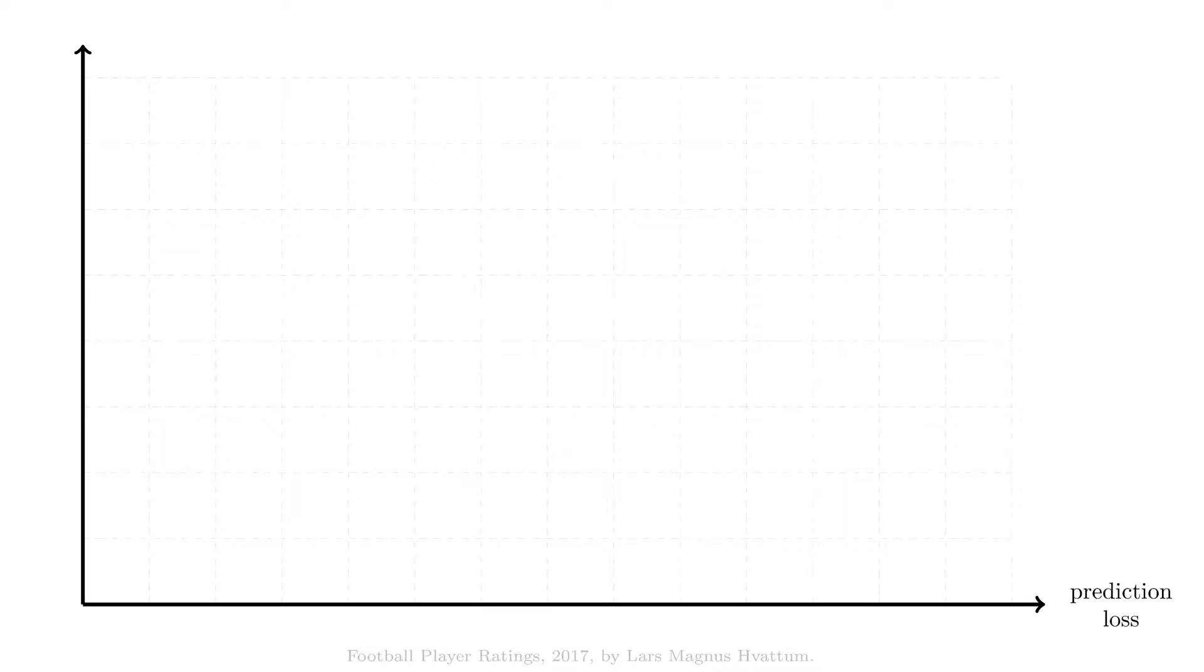On the first axis, record the prediction loss, that is, how good are the ratings when used to predict outcomes of football matches. On the second axis, record the repeatability, which we decided to measure using the correlation between ratings as calculated for two different halves of the complete set of matches.